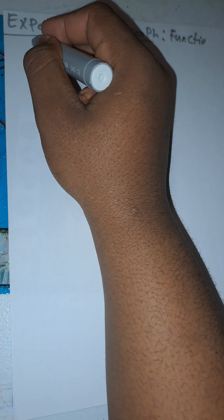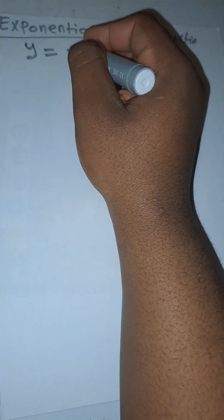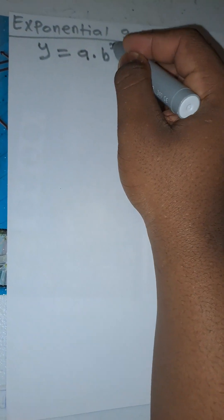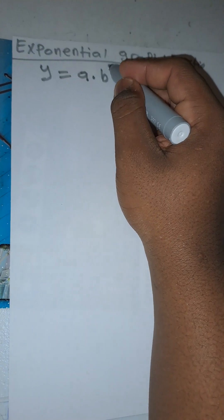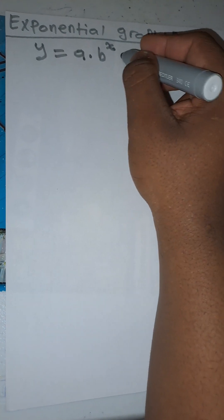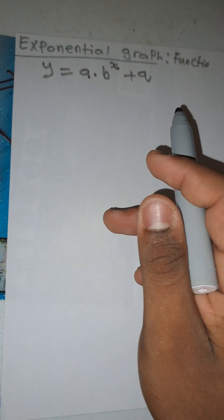Today we'll be doing exponential graphs, the last graph of functions. The exponential graph deals with exponents and is given by the general equation y = a times b to the power of x, plus q. This is the exponential graph equation, where a is the vertical shift.